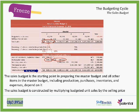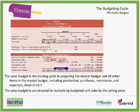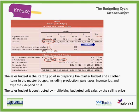The total cash collection as budgeted for the first quarter, second quarter, third quarter, and fourth quarter gives us a planned budgeted collection of cash of $6,910,000, which corresponds to $7 million of sales during that specific year.